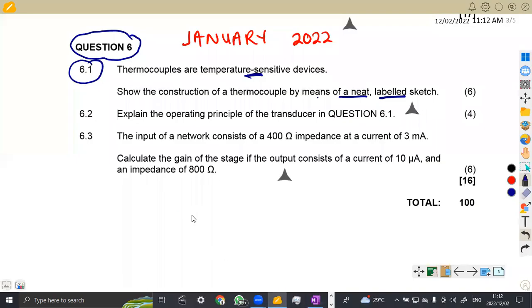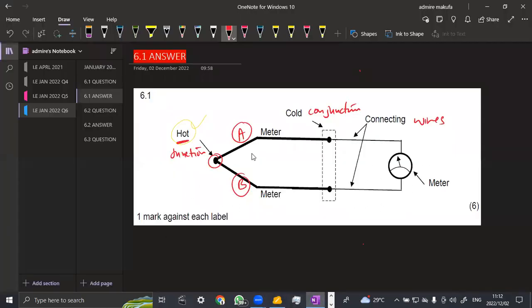Let's check the 6.2. Now we are given to explain the operating principle of the transducer in question 6.1. Which transducer is that one? The thermocouple that we had on 6.1. And that's four marks for the explanation. How does a transducer work, which is a thermocouple?